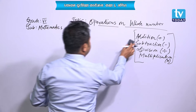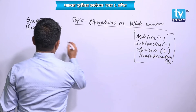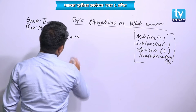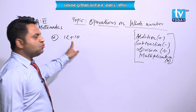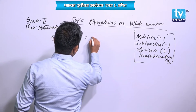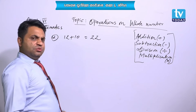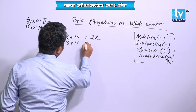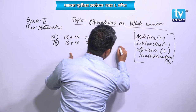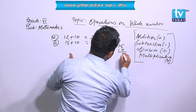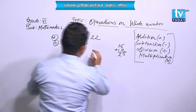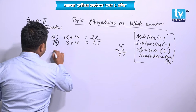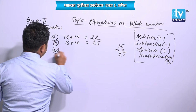Now, how to use all these signs? Suppose 12 plus 10 — there is an addition symbol, that means we have to add. That gives 22. Suppose 15 plus 10: 5 plus 0 is 5, 1 plus 1 is 2, that means 25.